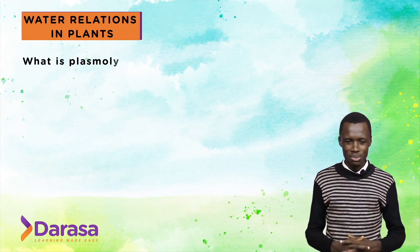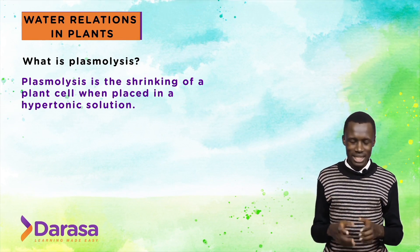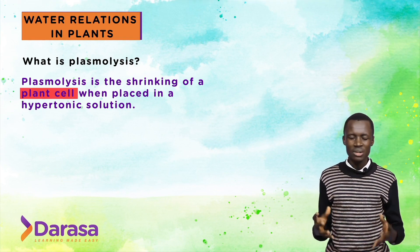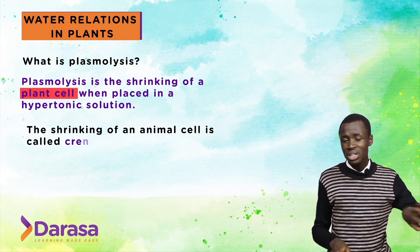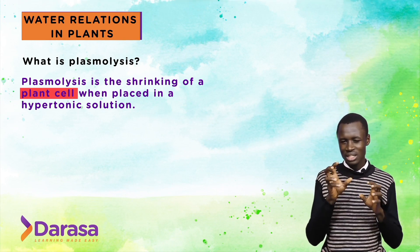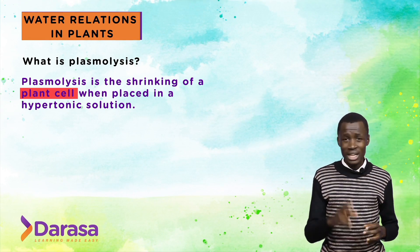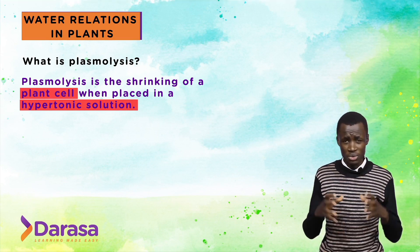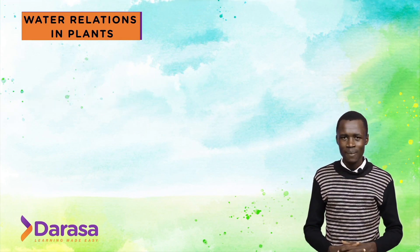Plasmolysis is the shrinking of a plant cell when placed in a hypertonic solution. Note the keywords: first, it is specifically a plant cell — the shrinking of an animal cell is called crenation, not plasmolysis. Second keyword: hypertonic solution — you must specify the solution. So: the shrinking of a plant cell when placed in a hypertonic solution is plasmolysis.